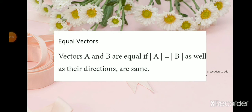Equal vectors. Vectors A and B are said to be equal if magnitude of A is equivalent to magnitude of B, as well as their directions are the same.